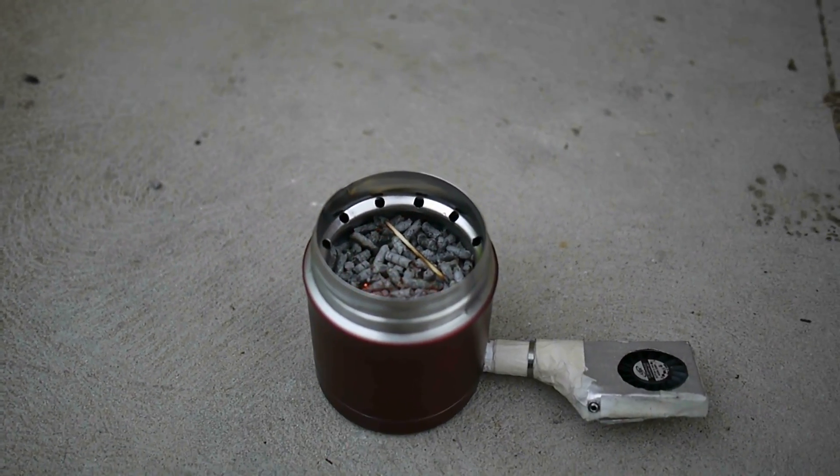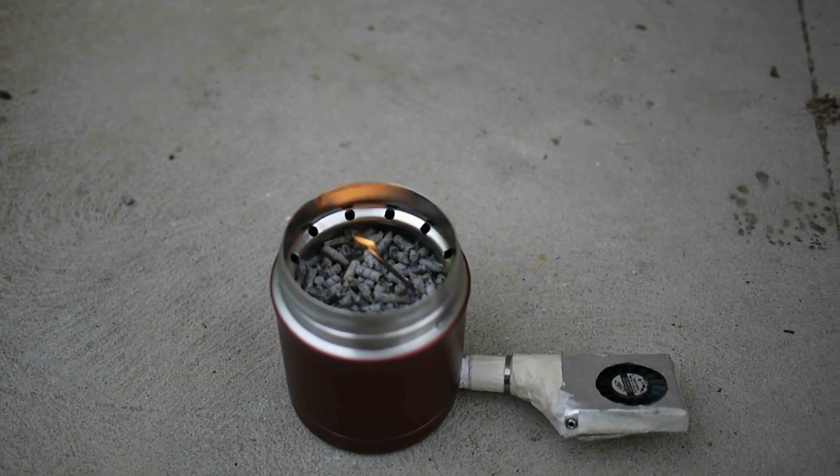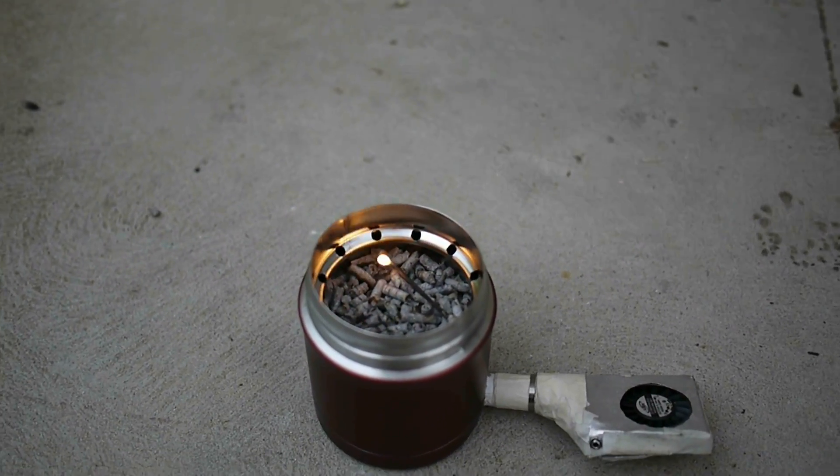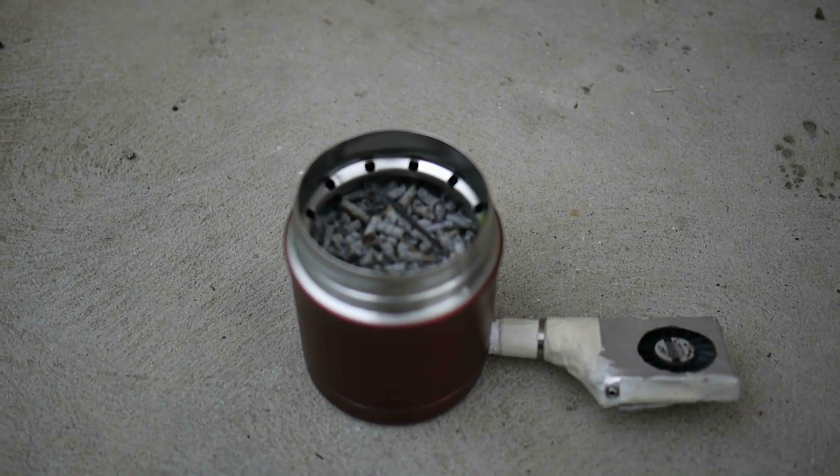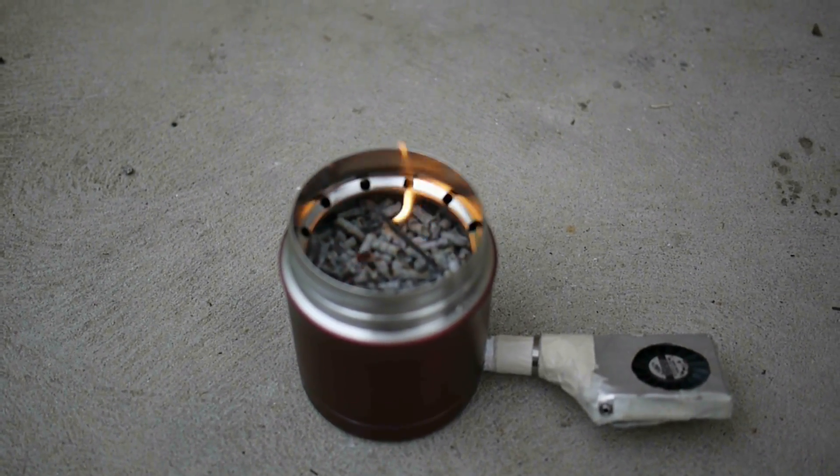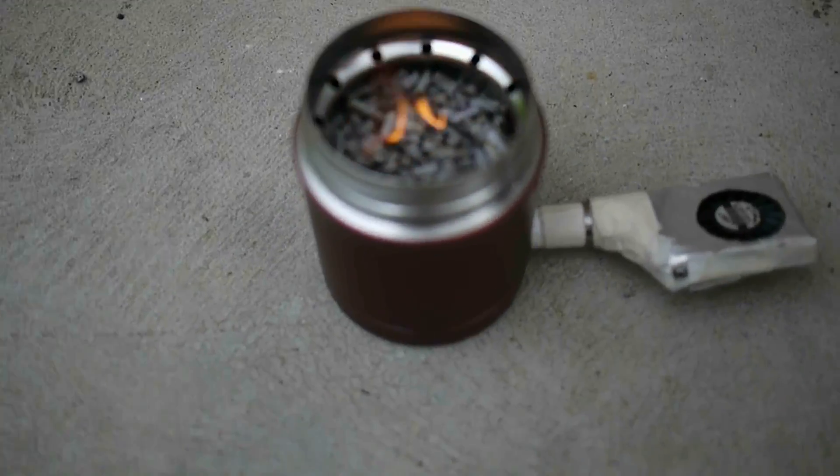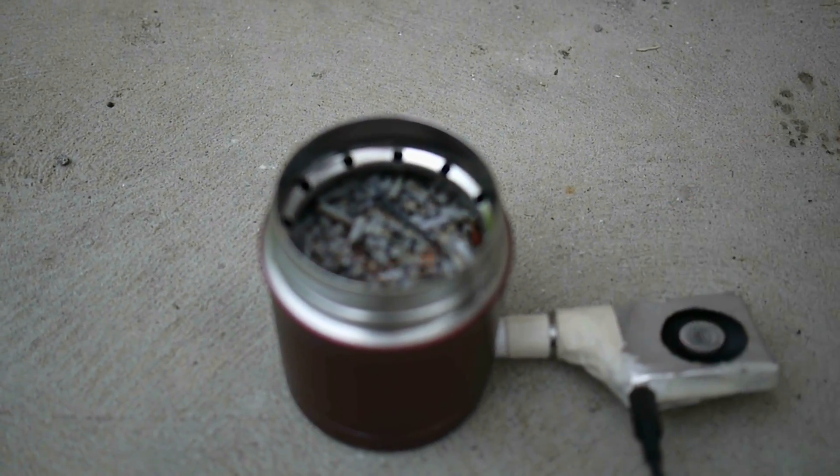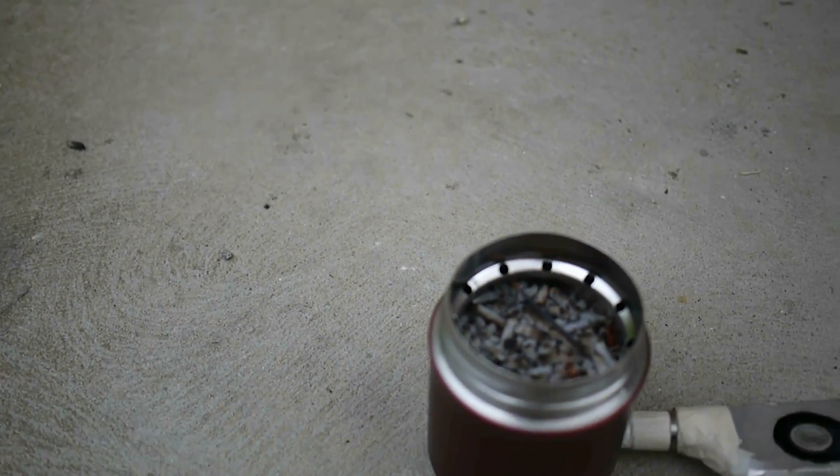There we go. Okay, you can't really see the flame much, but what we do is let that burn for about 30 seconds or so, and then we'll turn the fan on. There is flame there, you can't see it. Okay, so let's try putting the fan on. Okay, that looks all right. Now we'll put the pot stand on.